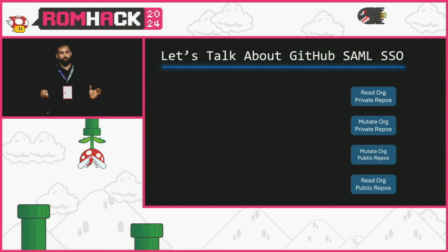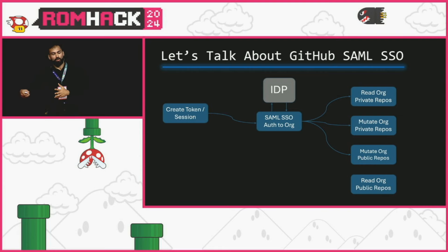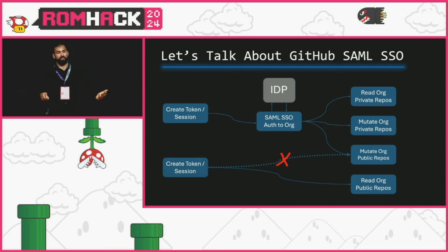Understanding SAML SSO is important as a defensive mitigation. If someone logs into GitHub with their personal account and wants to access resources associated with their employer who has SAML SSO enabled and enforced, they need to go through that authentication flow — without it they can't access private resources or make changes to organization-owned public repositories. It creates a firewall between employer-owned assets and assets associated with the personal GitHub account.